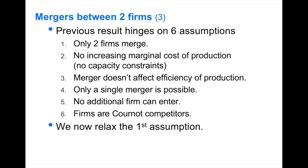The previous argument was made under six implicit assumptions we now want to relax: only two firms merge; no increasing marginal cost; the merger doesn't affect production efficiency; only a single merger is possible; the industry size is fixed; and firms are Cournot competitors. In the rest of this presentation, we relax the first assumption — allowing more than two firms to merge.